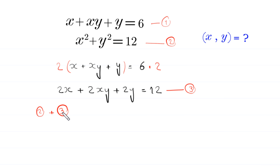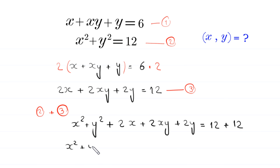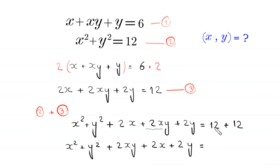Now we add equation 2 and equation 3. The left-hand side becomes: x squared plus y squared plus 2x plus 2xy plus 2y, and the right-hand side is 12 plus 12 equals 24.